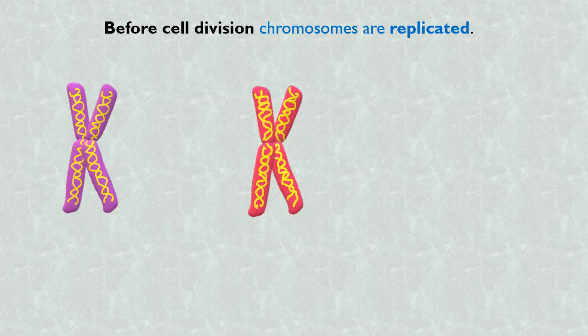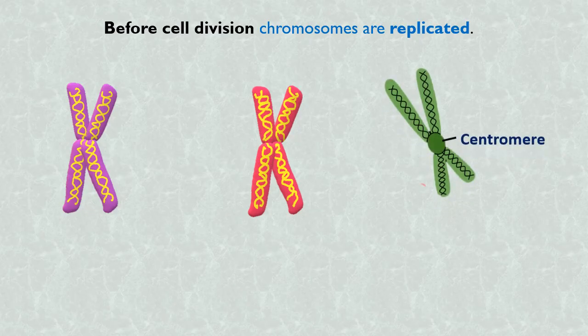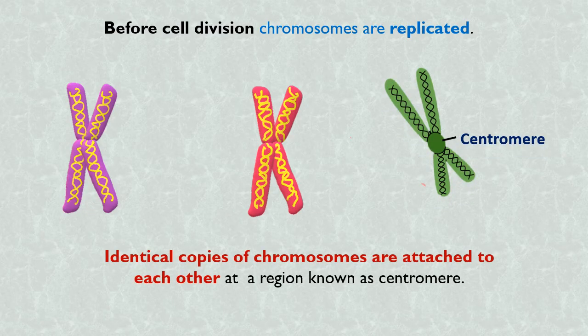Here, note that these identical copies of chromosomes remain attached to each other in a region known as centromere. This connection is maintained for a particular duration during the process of cell division.